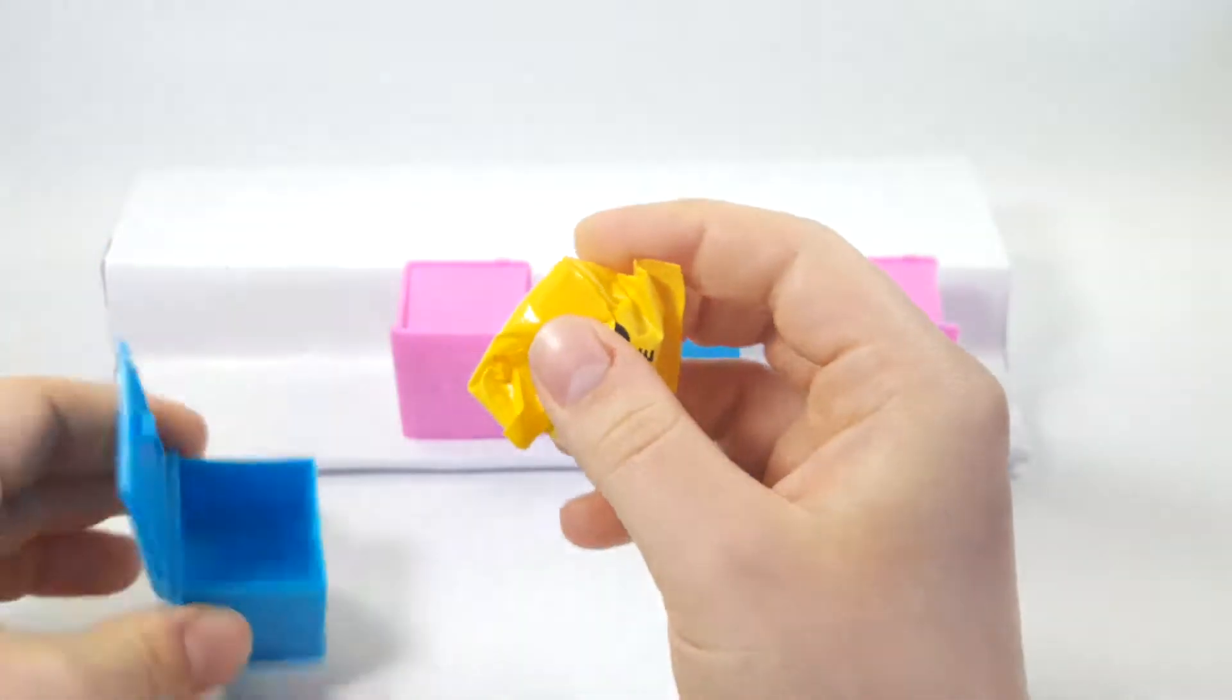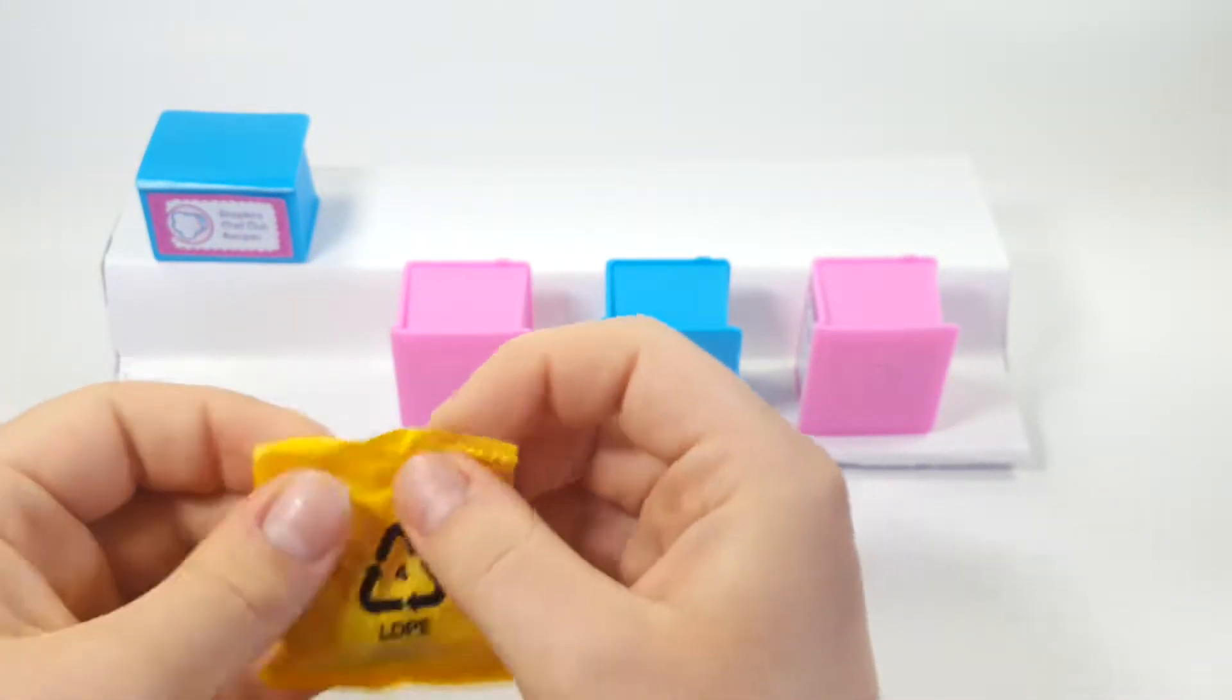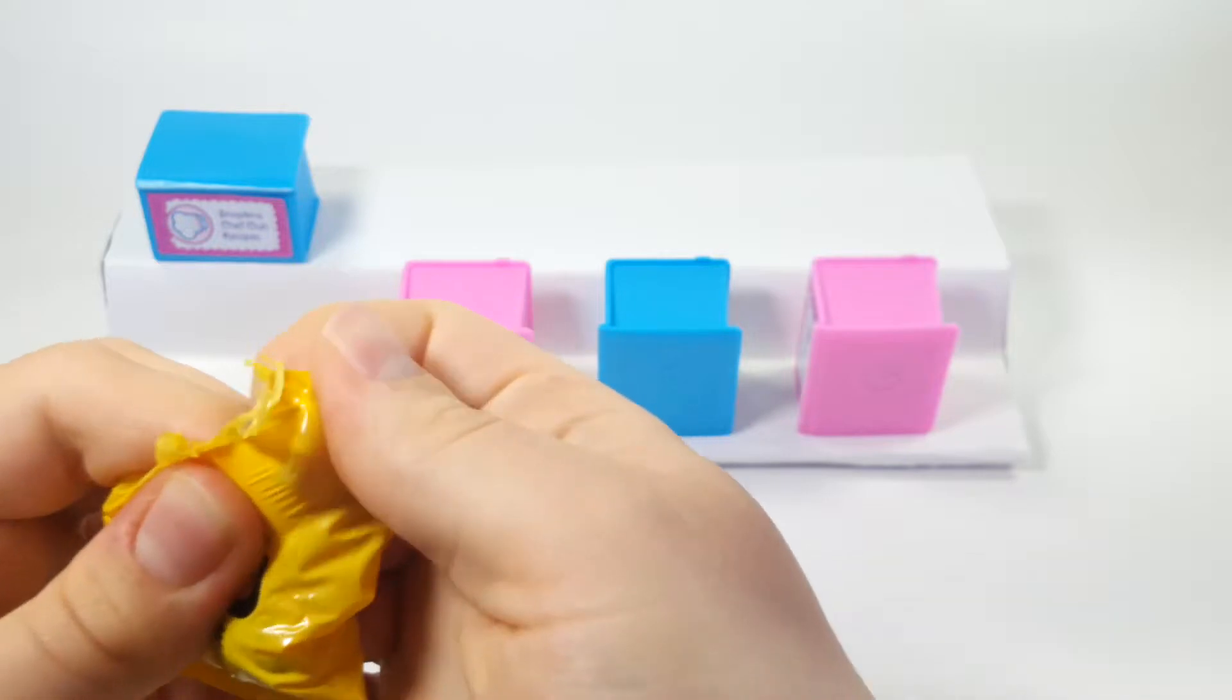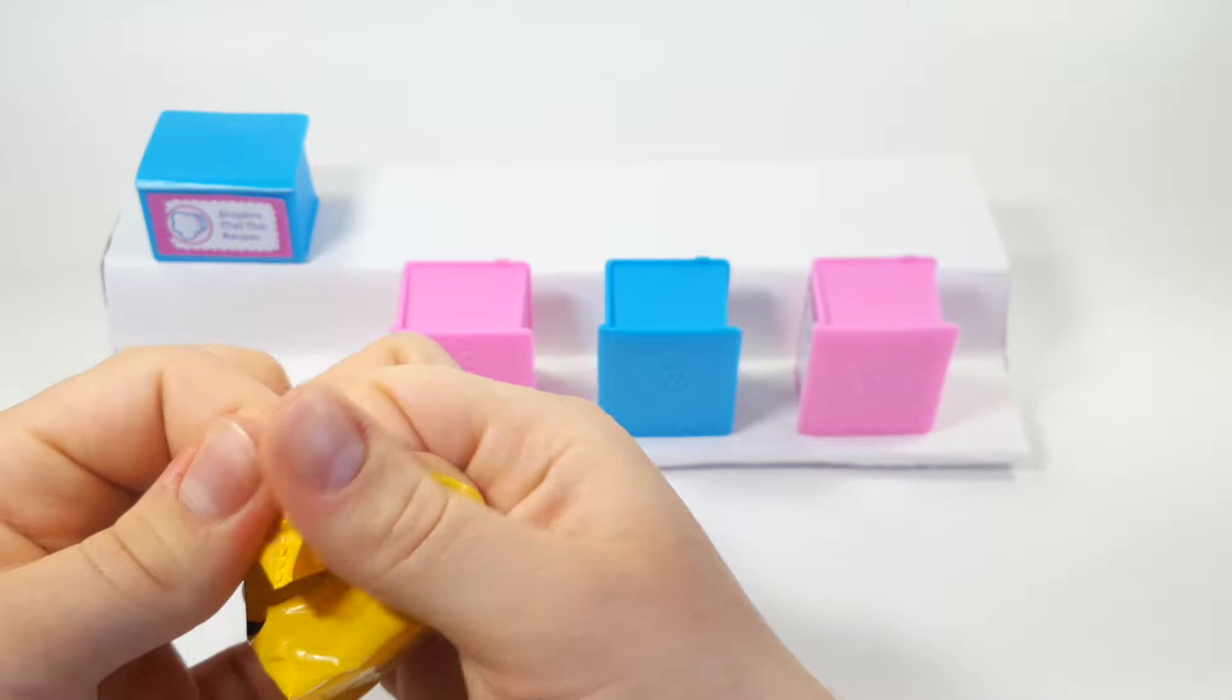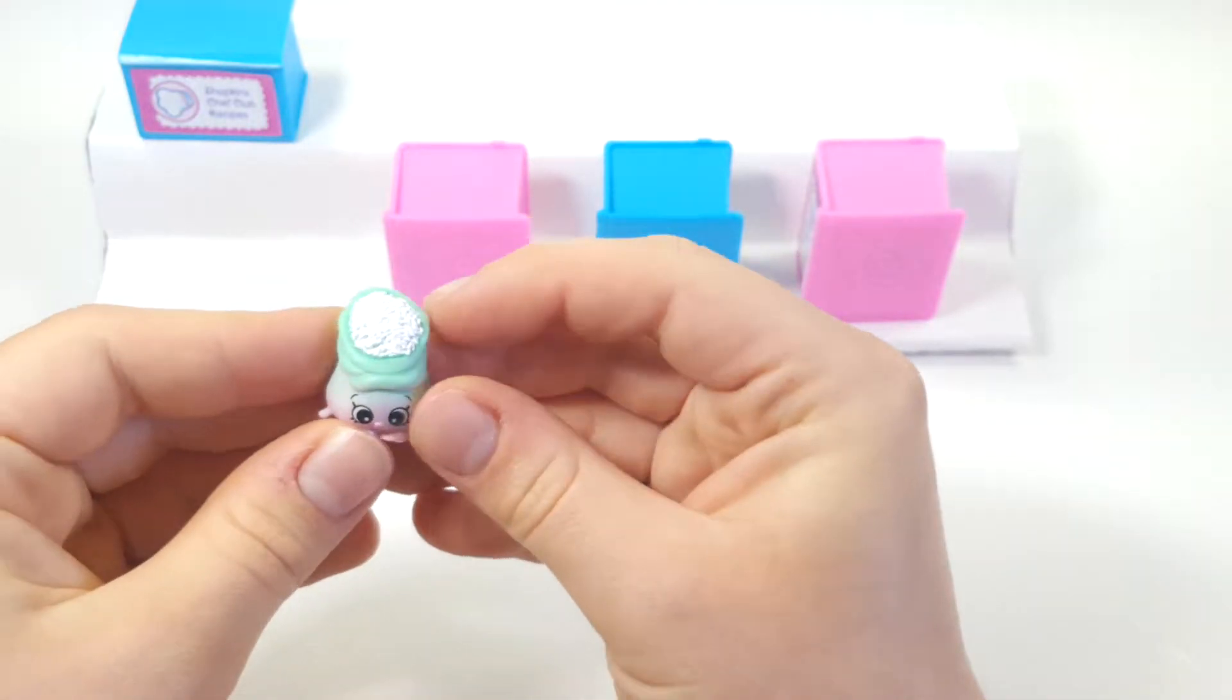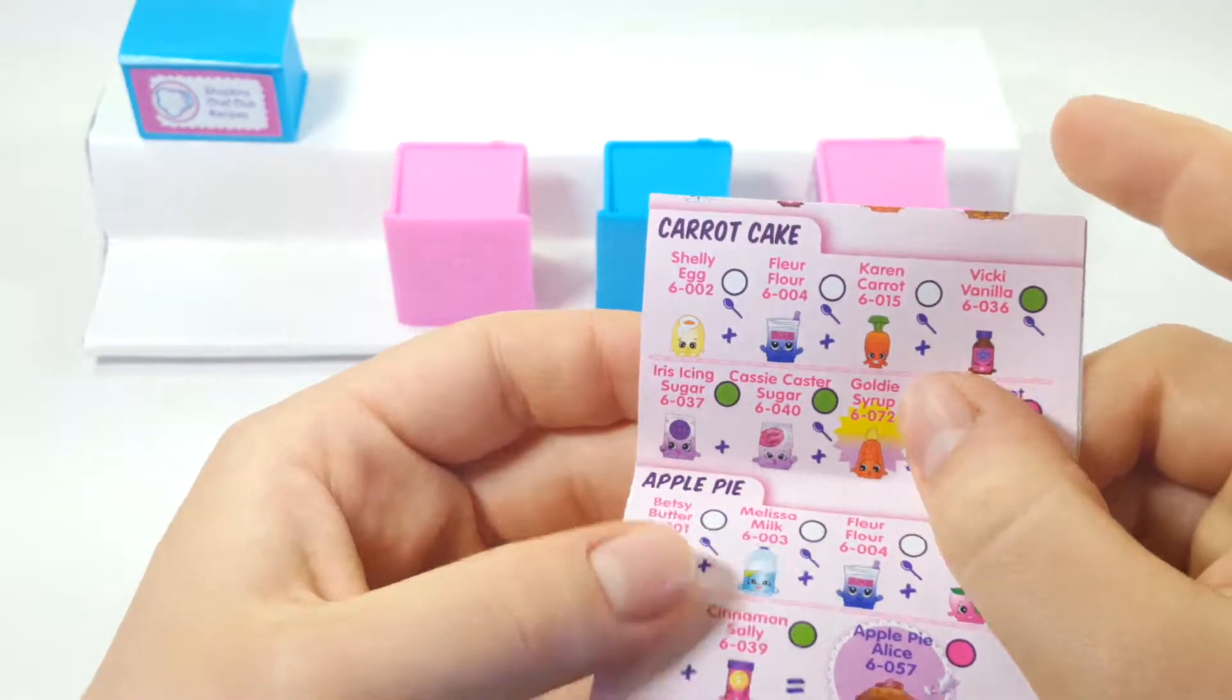So we've got a little blind bag inside, of course. And let's open it up. There we go. Okay. And here we go. This is our first Shopkin. She looks like a sack of rice. I am actually not very familiar with Shopkins.